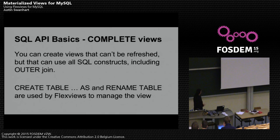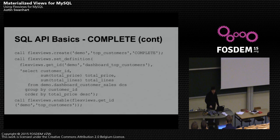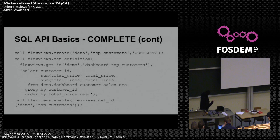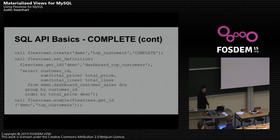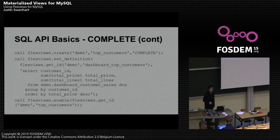Complete views support outer joins, GROUP_CONCAT, and other complex operations — they use CREATE TABLE AS SELECT and RENAME TABLE to manage the view. Here we create a demo dashboard 'top customers' as complete. We call flexviews.set_definition and flexviews.get_id to retrieve the MVID. The SELECT statement defining the view includes an ORDER BY, so the results in the table are ordered accordingly — convenient for automatic ranking. Then you call flexviews.enable with the MVID to build the view.